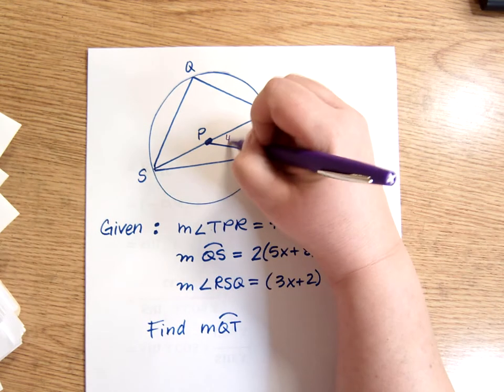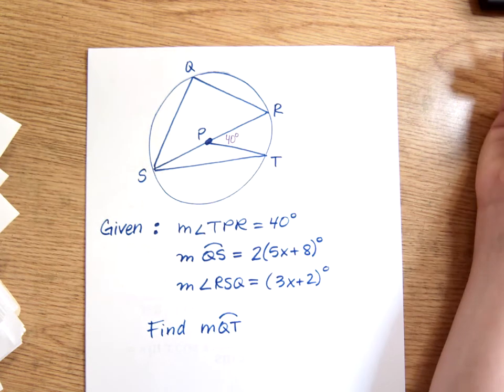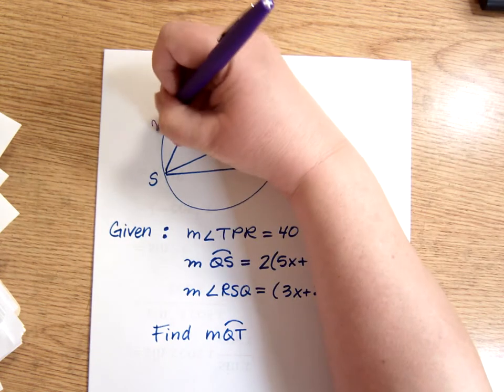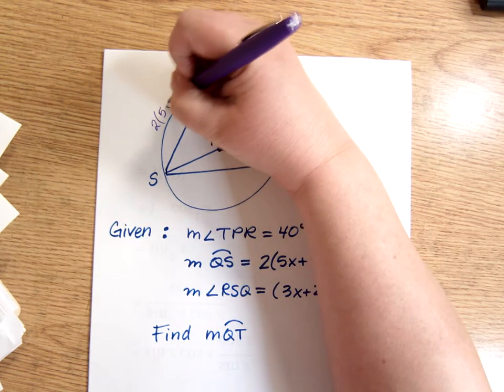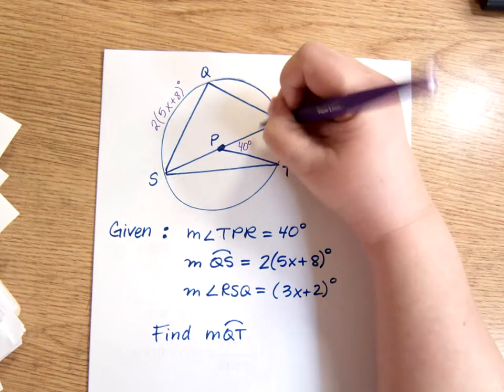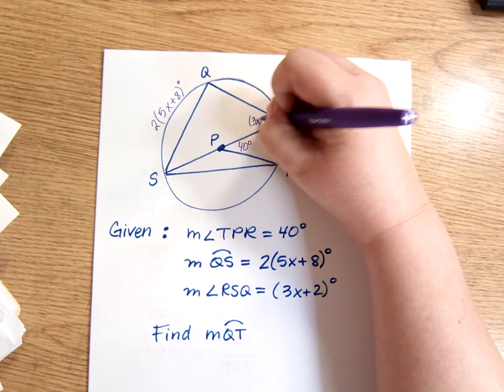Let's see, this is 40, and this is 2 times the quantity 5x plus 8, and this is 3x plus 2.